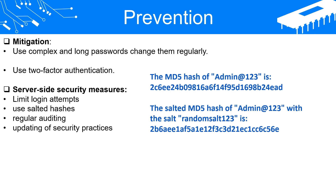Conclusion. In the evolving landscape of digital security, understanding the methods used in cryptographic attacks is crucial for both individual users and organizations. By using strong, complex, and unique passwords, regularly updating them, and employing additional security measures like two-factor authentication and salted hashes, we can significantly reduce the risks associated with these types of attacks. It's a continually evolving challenge, as attackers develop new methods and security professionals create new defenses, but awareness and understanding are the first steps in the journey towards robust data protection.